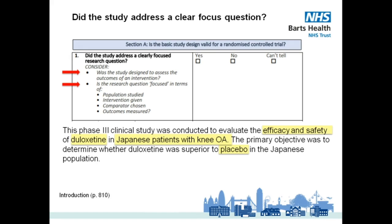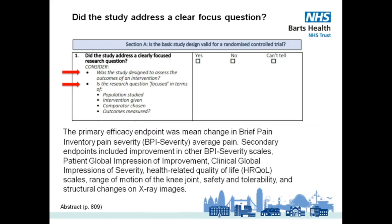Further details of the outcomes measured can be found in the abstract under the patients and methods section. The primary outcome focuses on pain severity. Secondary outcomes look at other possible benefits of the treatment, including health-related quality of life, as well as safety and tolerability. So did the study address a clear focused research question following the PICO method? We can take yes with confidence.